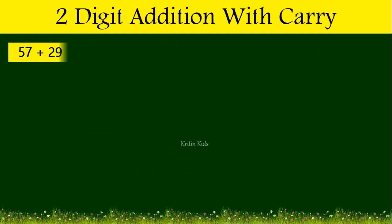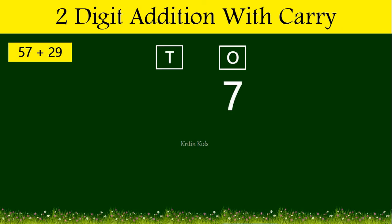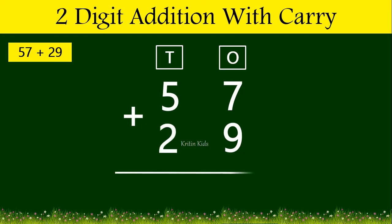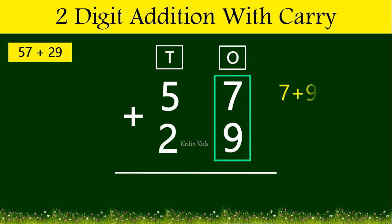Now let's take one more example: 57 plus 29. Here, 7 is at the ones position and 5 at the tens position. Likewise, 9 is at the ones position and 2 is at the tens position. Now let's add numbers at the ones position: 7 plus 9. 7 plus 9 gives us 16, of which 6 is on the ones position and 1 is on the tens position.